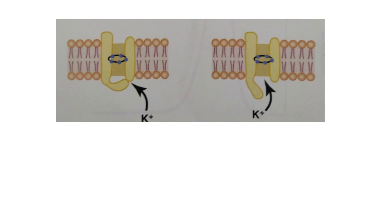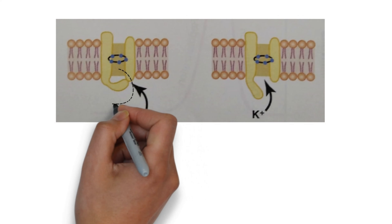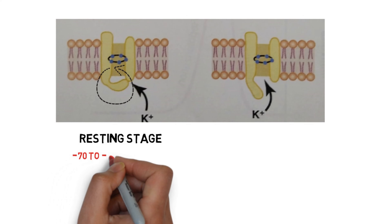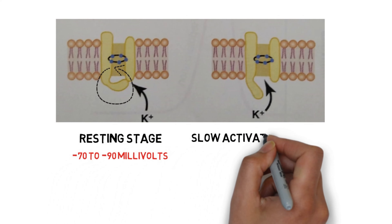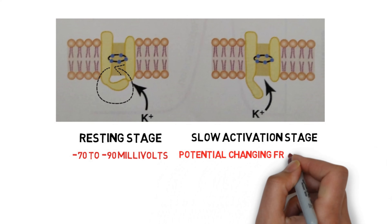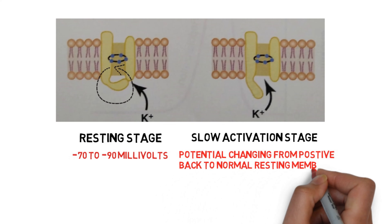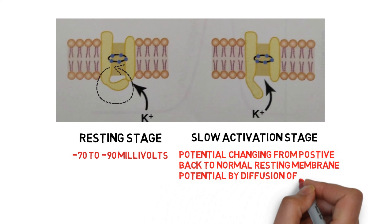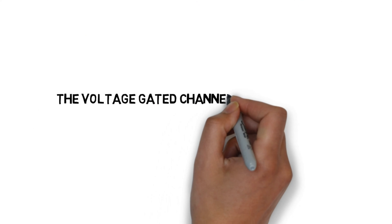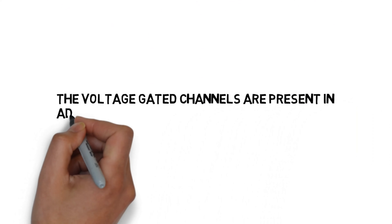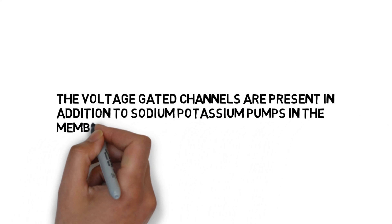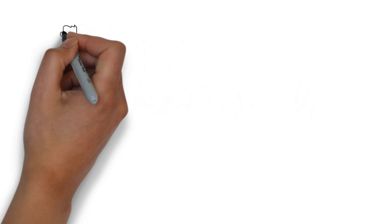These are voltage-gated potassium channels. The gate is closed at the resting stage. Then, in the depolarization stage — also called the slow activation stage — the potential changes from positive back to the normal resting membrane potential by diffusion of potassium ions to the outside. One more thing to remember: voltage-gated channels are present in addition to the sodium-potassium pumps in the membrane. We will discuss the sodium-potassium pumps in the next video.